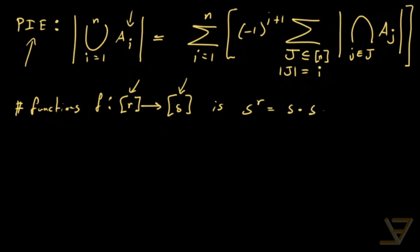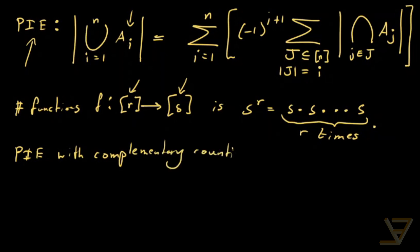What we're going to be using is PIE, so the principle of inclusion exclusion with complementary counting. How are we going to do that?